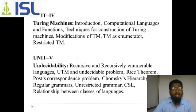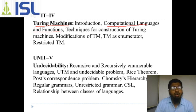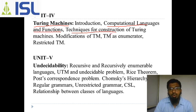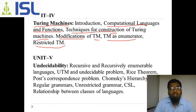Now moving to unit four: the Turing machine. This is an important topic. We will see the introduction to Turing machines, computational language and functions, techniques for construction of Turing machines, why we need Turing machines, modifications of TM, TM as an enumerator, and restricted Turing machines. I will show you a graph diagram covering all five units after this.